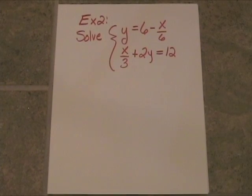All right. Here's another one. Solve the system. y equals 6 minus x over 6, and x over 3 plus 2y equals 12. Now both of these are going to be linear, because we don't have any second powers or third powers or division by variables. So we're trying to see, you know, is this thing going to have answers or not?